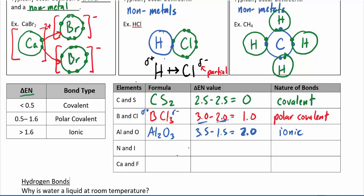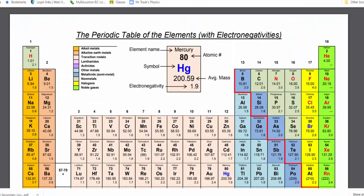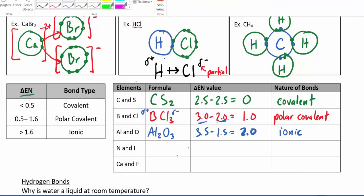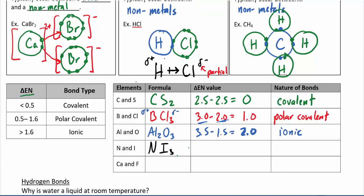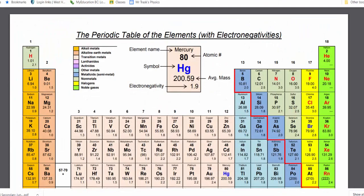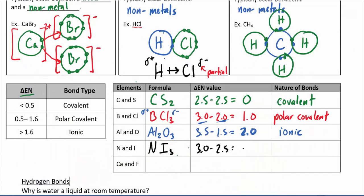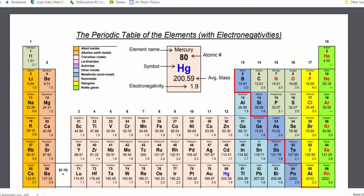That's not a big surprise because aluminum is a metal and oxygen is a nonmetal. For nitrogen and iodine forming NI₃: nitrogen has an EN of 3.0 and iodine has 2.5, giving a difference of 0.5. This is right on the borderline between covalent and polar covalent. Since the scale is continuous and 0.5 is our chosen cutoff, we'll call this polar covalent — not strongly polar, but right on that borderline.